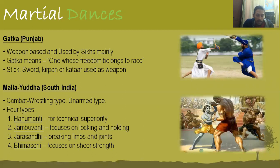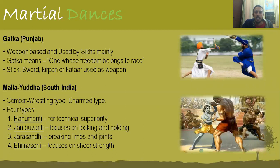Hanumati is for technical superiority. Jambuvanti — named after Jambavan, a Mahabharata character — is famous for locking and holding. Jarasandhi — named after the evil character killed by Bhima — is about breaking off your opponent's hands and legs. Bhimaseni, named after Bhima, one of the five Pandavas, represents sheer strength. These are the four variants of Malyudh.